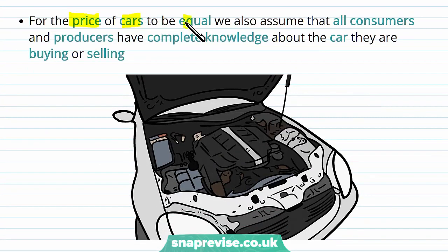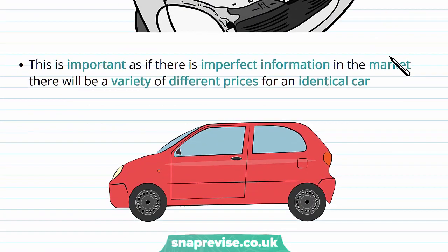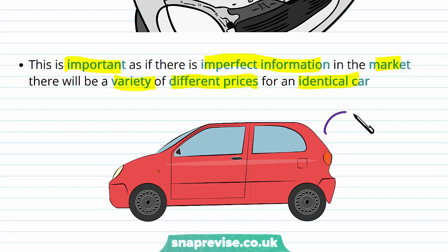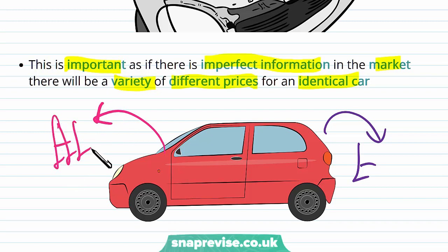For the price of cars to be equal, we also assume that all consumers and producers have complete knowledge about the car they are buying or selling. For example, everyone should be able to know about the quality of the car engine and that it's not going to break down. This is very important because if there is imperfect information in the market, there will be a variety of different prices for an identical car. If the car is slightly worse, it could be worth less, but if it's perfectly pristine, it's worth more — and then we break our first assumption that all cars are identical and therefore have the same price.